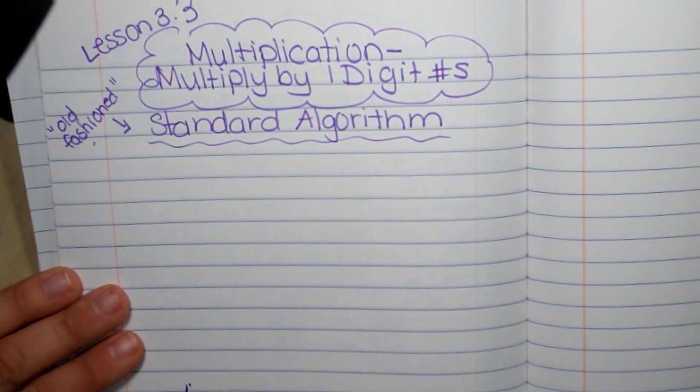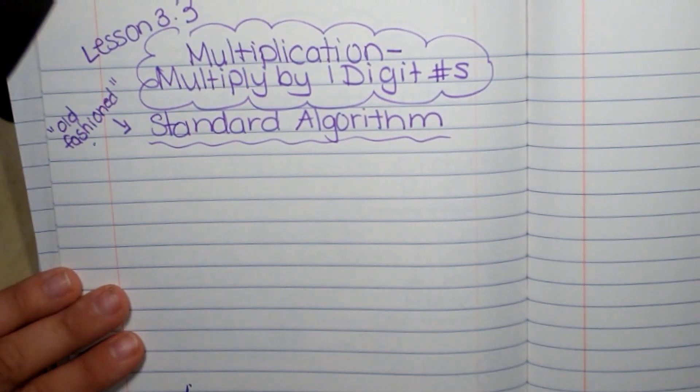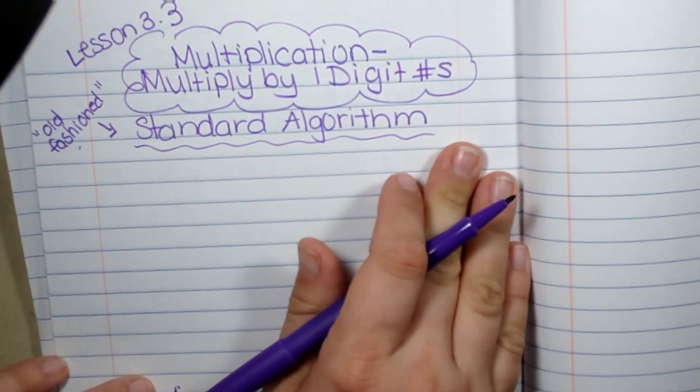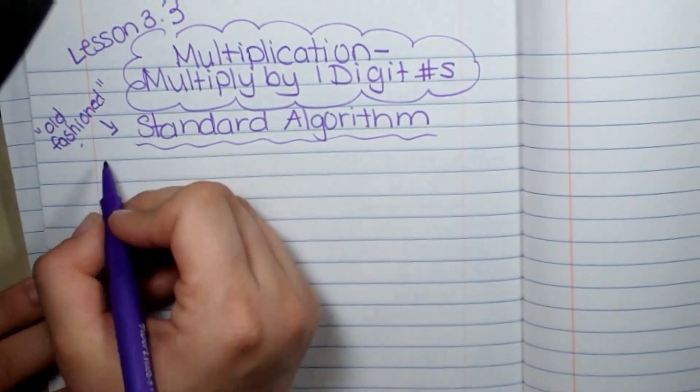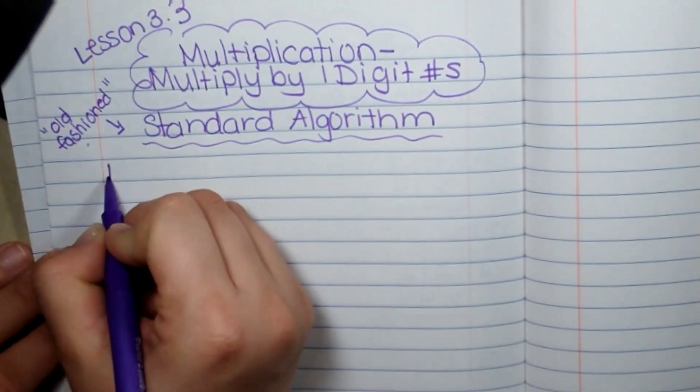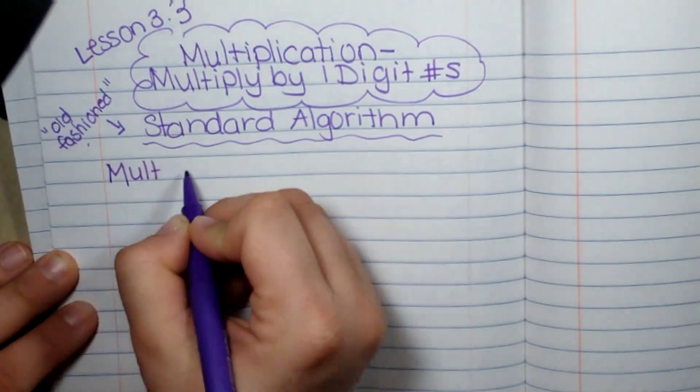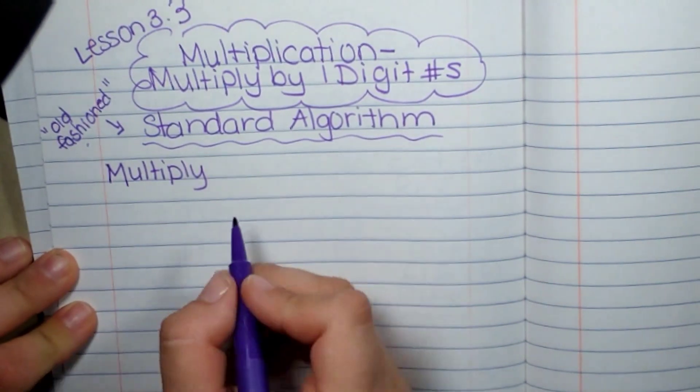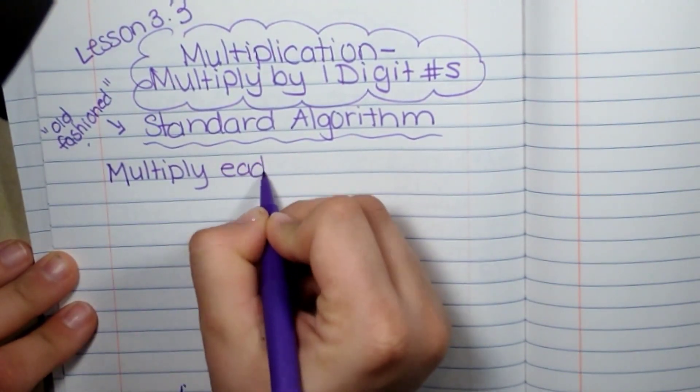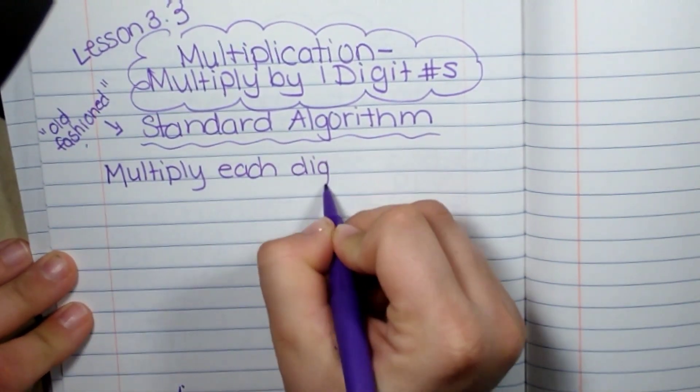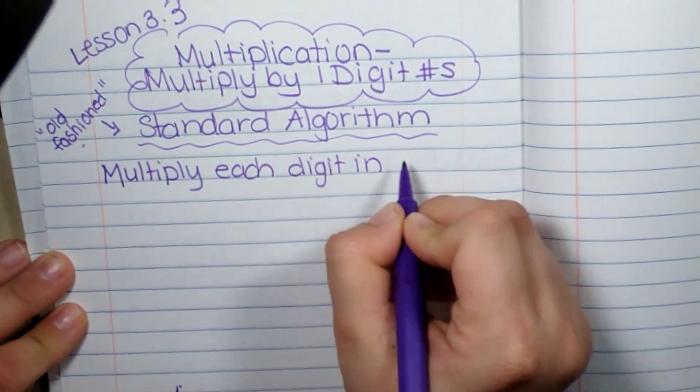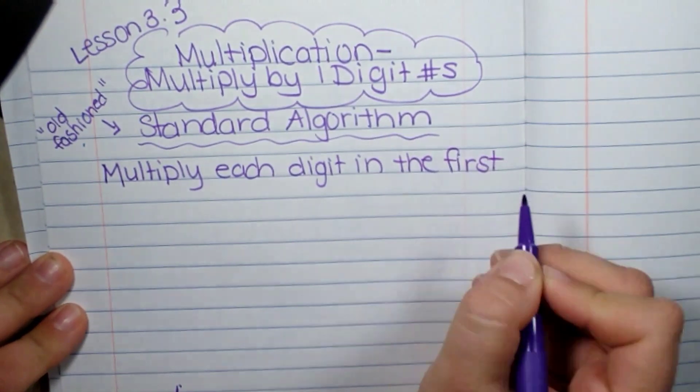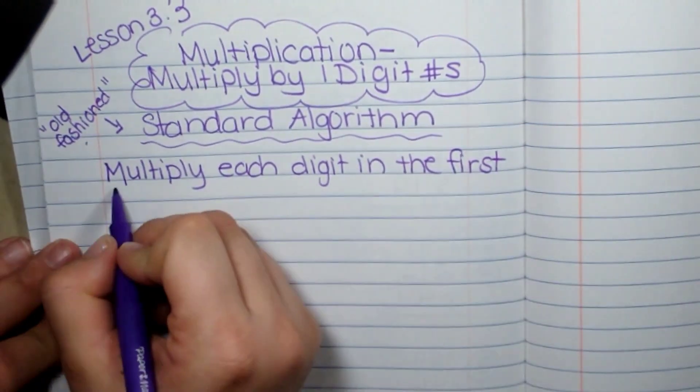So the first step is to multiply each digit in the first factor by the second factor. Now remember, our factors are the two numbers that are being multiplied together.